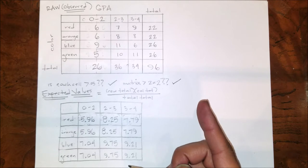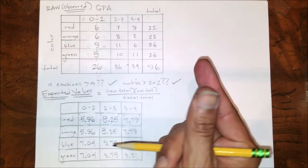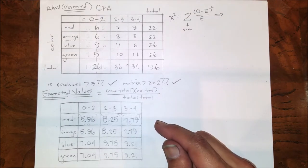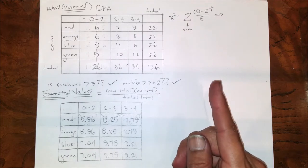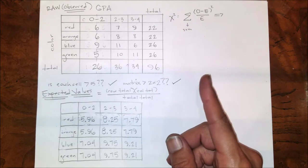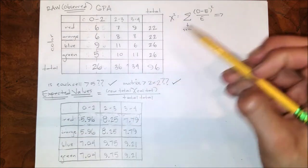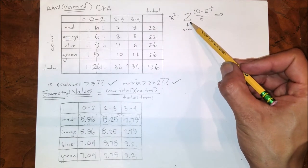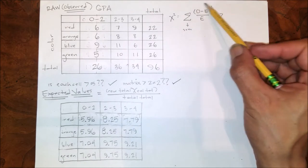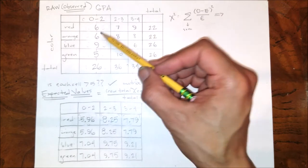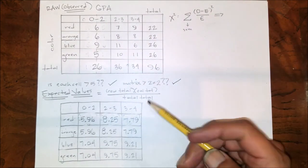Now the formula for your chi-square looks like this. Let's talk a little bit about the pieces of this formula. You can see here this is the summation symbol. What this means is I'm going to perform this operation for each one of these cells and then add them all together when I'm finished.